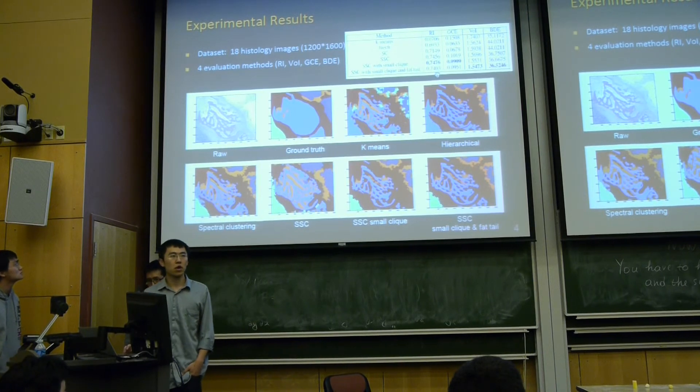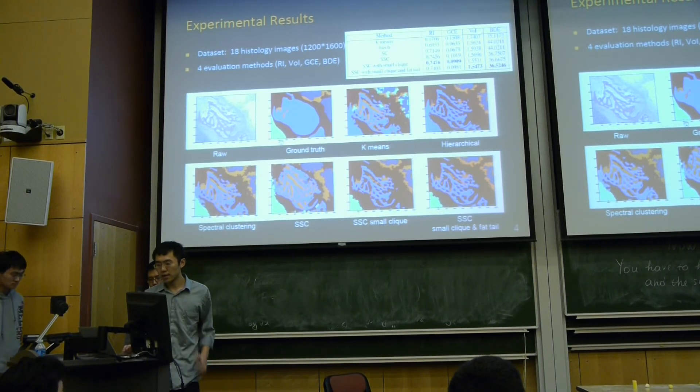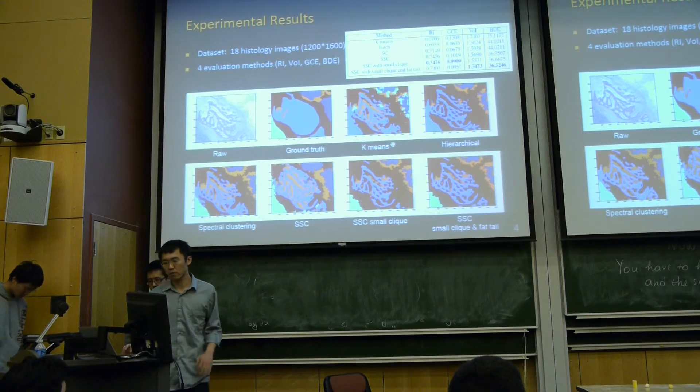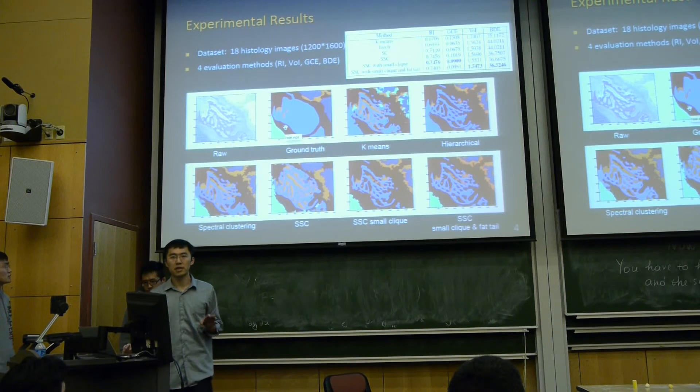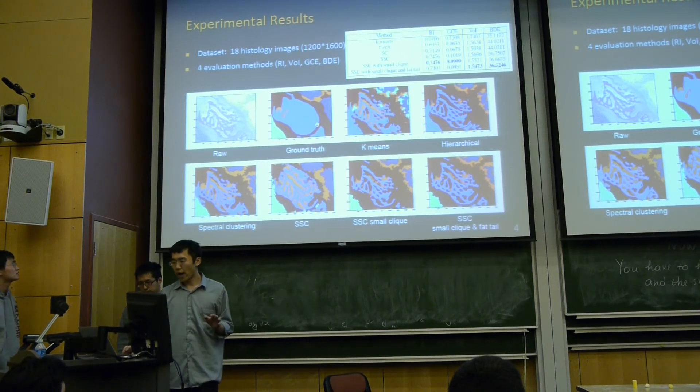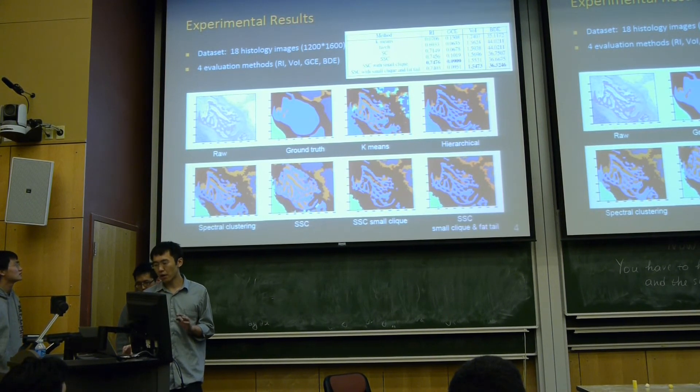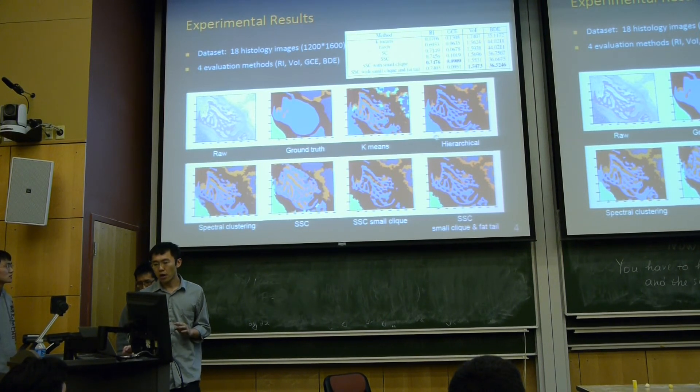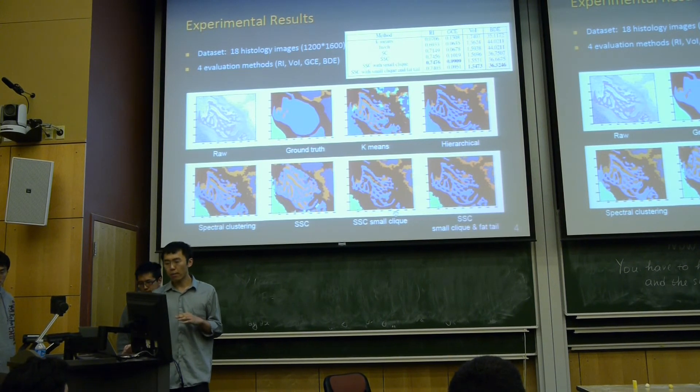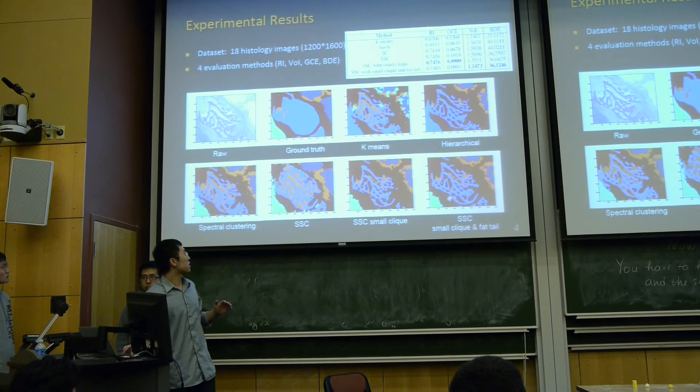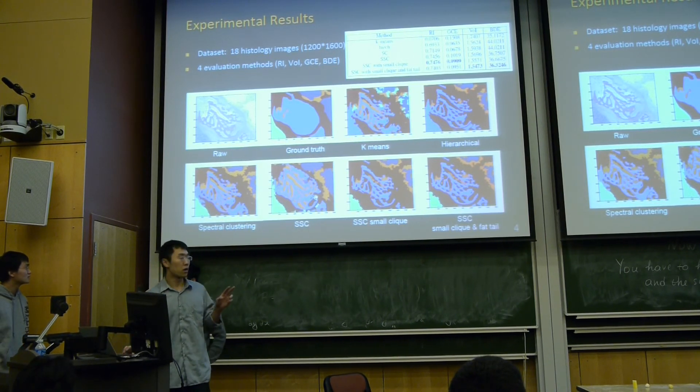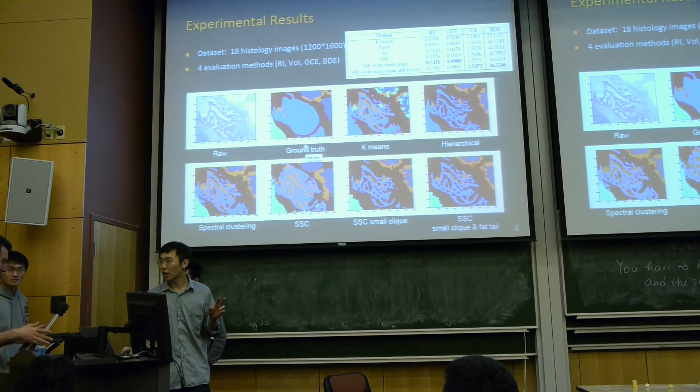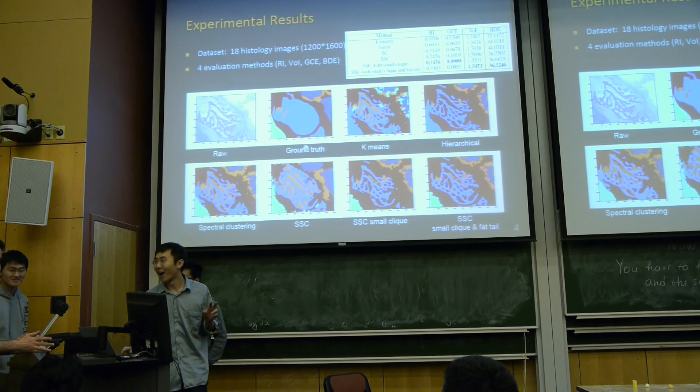To give you a more straightforward sense of what we're doing here, this is one example of our result. This is a raw image, and this is what we call the ground truth, labeled by experienced doctors. This is k-means and hierarchical. We can tell that both misclassified the aqua part, which is the cartilage. Looking at our method compared with the original SSC, we can tell there are two improvements. The first one is inside the bones. In the ground truth, they are not really uniform.